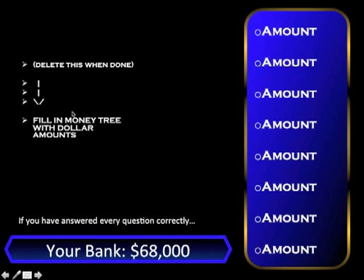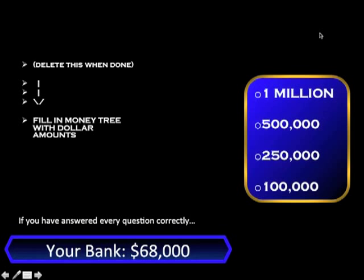Again, you would delete these little instructions here. Then when you hit next, the round one money tree disappears and the round two one appears. There are four questions in round two. I have not included a wrong answer consequence — like walking away with $1,000 if you get it wrong. No harm, no foul.